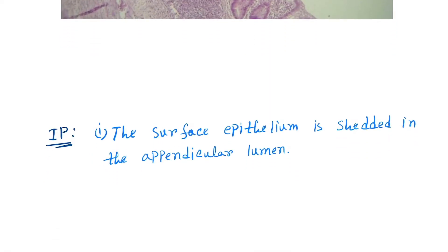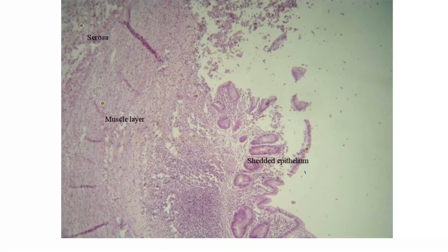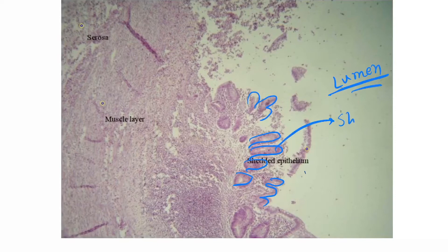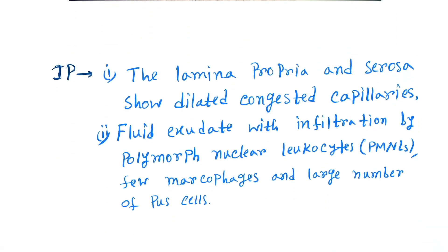The first feature is the surface epithelium is shed into the appendicular lumen. Here is the lumen, and these are the shed epithelial cells — the epithelial layer is no longer organized. This is the shed epithelium.